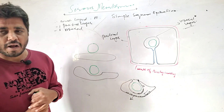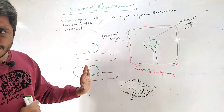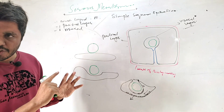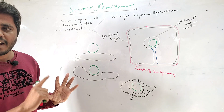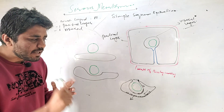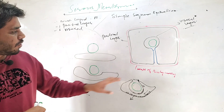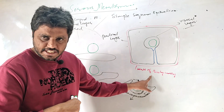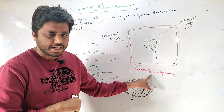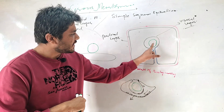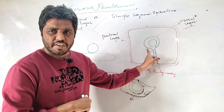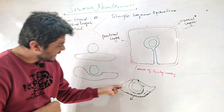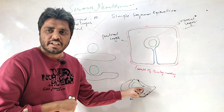I will explain these things with proper examples now. This serous membrane consists of two layers and they are made up of simple squamous epithelium. The outer lining is the wall of the body cavity. Serous membrane actually lies in the body cavity — this is the fold, and this is the organ covered by the serous membrane, which explains the formation of the cavity.